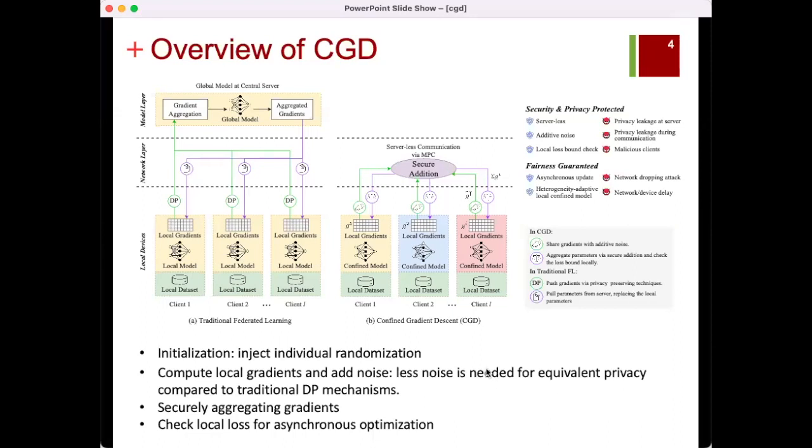We will later demonstrate that less noise is needed for equivalent privacy. Then they securely aggregate gradients, update confined models, and check local loss and update only if performance degradation meets threshold. This asynchronous optimization ensures better adaptation to local contexts.